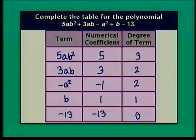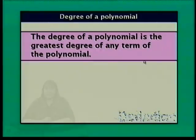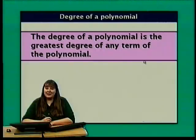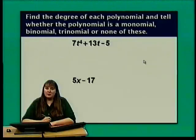The degree of this polynomial is 3. The degree of a polynomial is the greatest degree of any term in the polynomial — here the highest degree term was 5ab squared with degree 3. Now let's find the degree of each polynomial and identify whether it's a monomial, binomial, trinomial, or none of these.